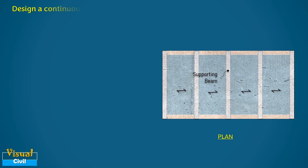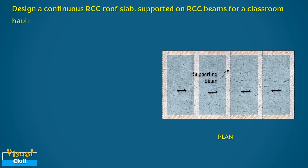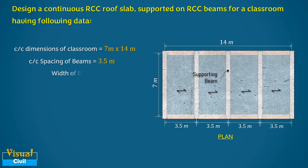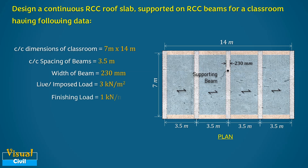Let us design a continuous RCC roof slab supported on RCC beams for a classroom 7 meters wide and 14 meters long. The RCC beams are spaced at 3.5 meter intervals. The width of beam is 230 mm. The superimposed load is 3 kN/m² and finishing load is expected as 1 kN/m². Use M20 grade concrete and Fe415 steel.